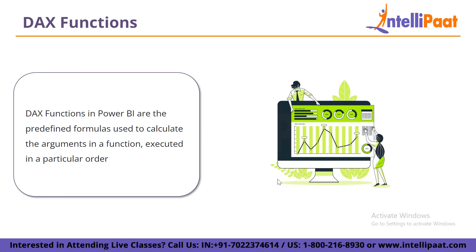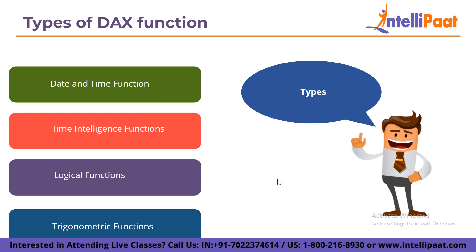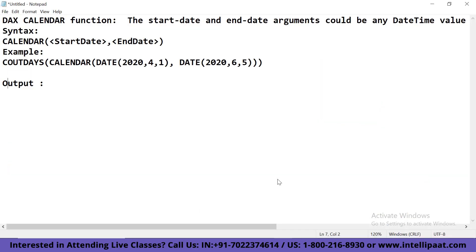However, the user cannot display these output tables returned by the functions. Now let's move forward and get a clear picture regarding the types of DAX functions. The first type is the date and time function. Similar to Excel, these functions are used to calculate the date and time periods in a date-time format. Let me give you an example of the date and time function — consider the DAX calendar function, where the start date and end date arguments could be any date-time value.